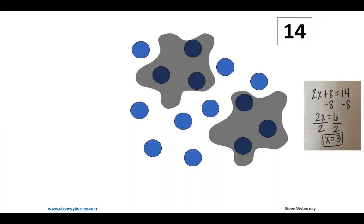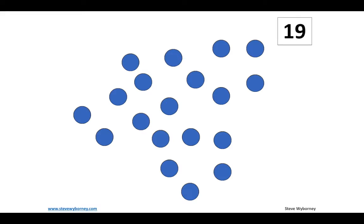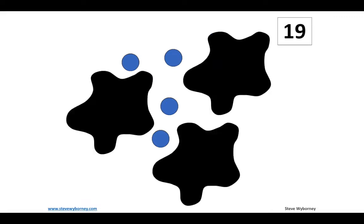Let's try another one. I have 19 objects here. These are kind of difficult, so you can try to count them in twos: 2, 4, 6, 8, 10, 12, 14, 16, 18, 19. They get kind of hard when they're not in rows. You can even check yourself by counting one by one. Okay, so we have three splats.